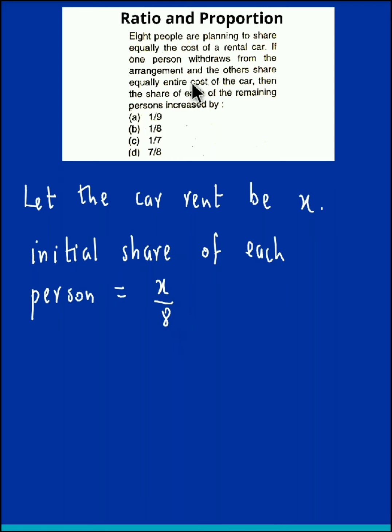Now since one person has withdrawn, the same amount x would be shared by seven persons. Therefore, the new share of each person would be x/7.